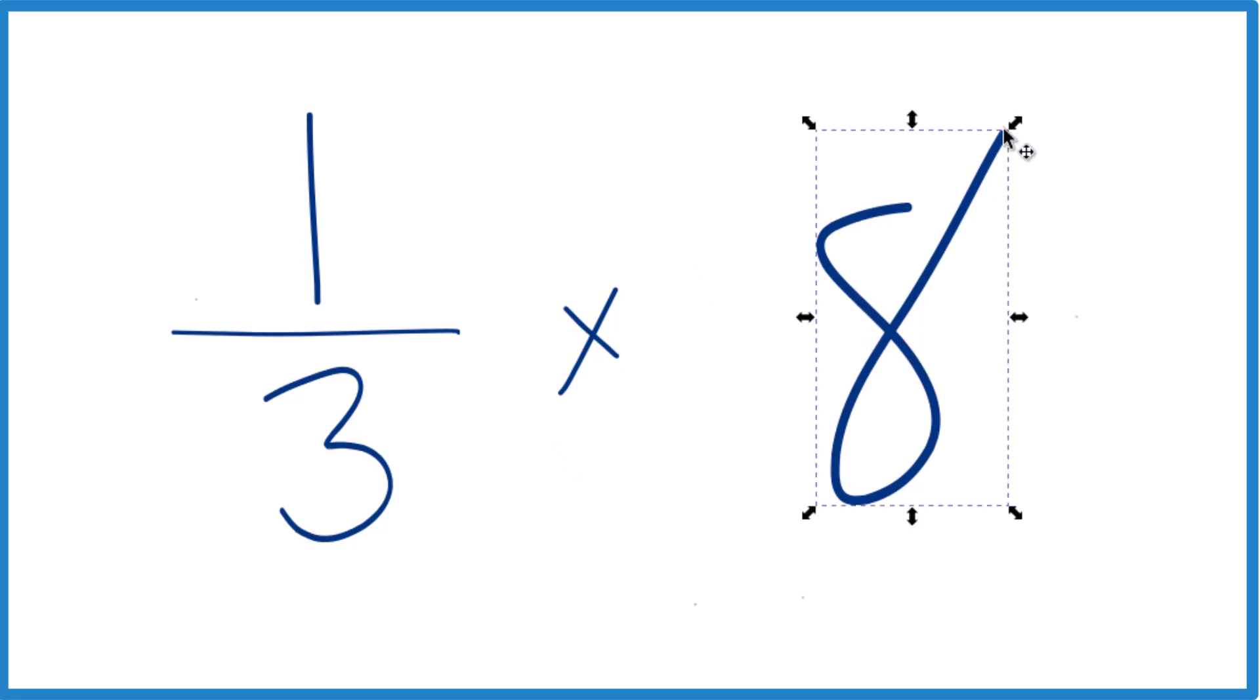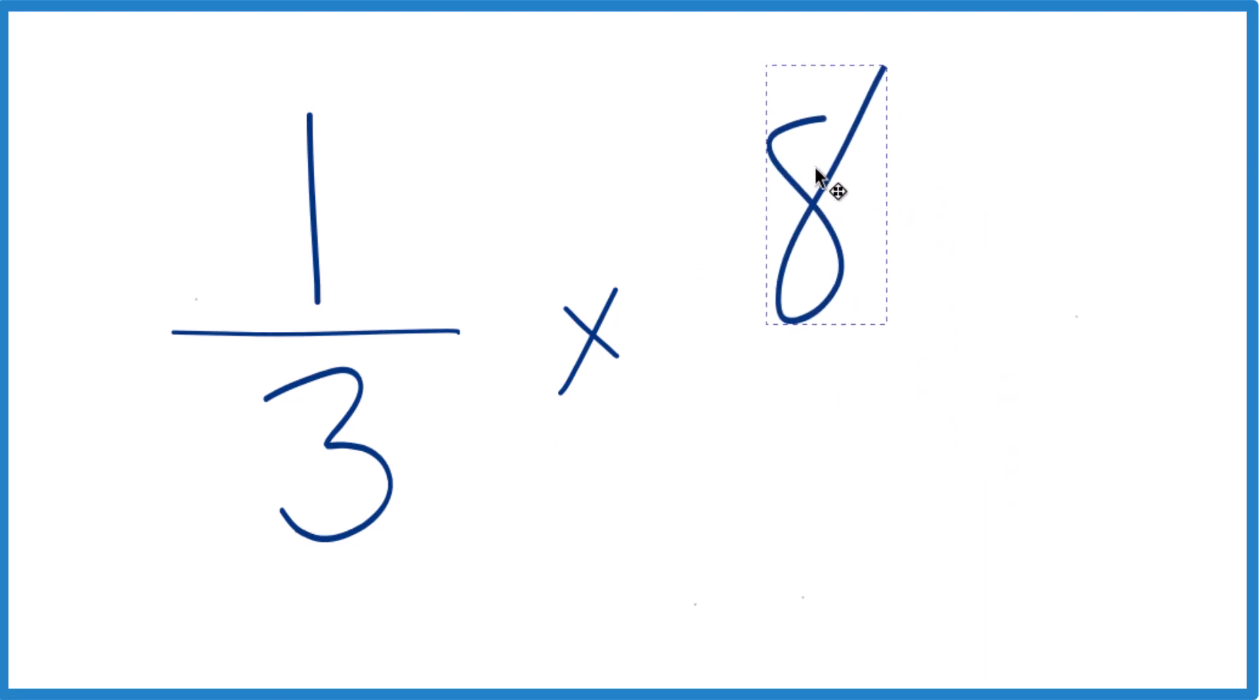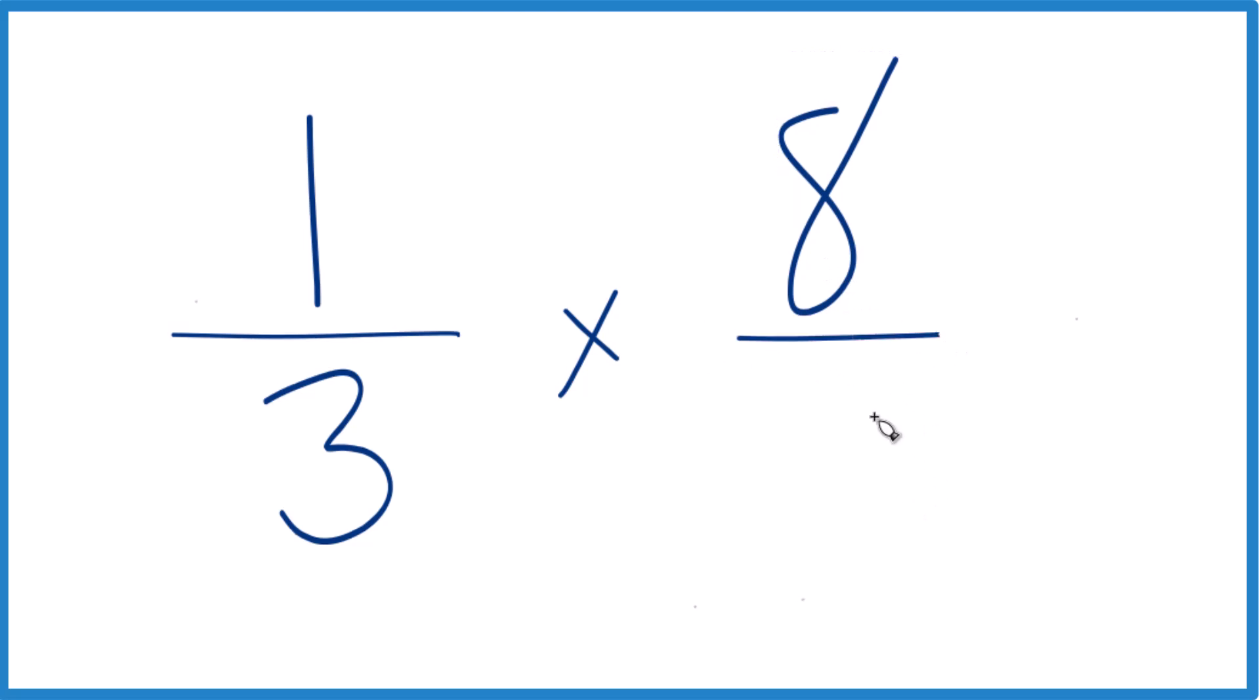And for the eight, let's do this. Let's shrink it down, move it up a little bit, and call this eight over one. Eight over one is the same as eight, but now we have these lined up nicely. Because when you multiply fractions...